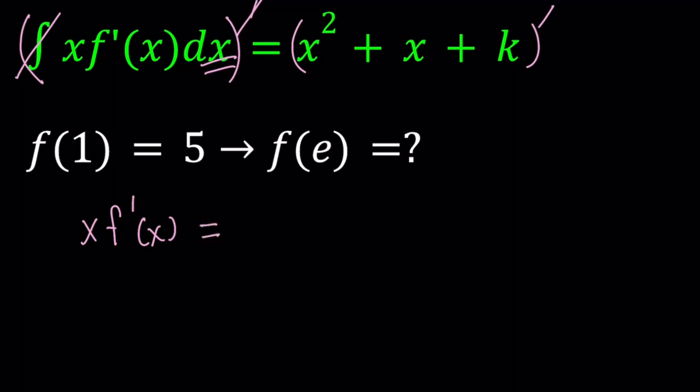The derivative of x squared plus x plus k—k is a constant by the way, which comes up from indefinite integral. So the derivative of x squared is 2x plus 1, and the derivative of k is 0.